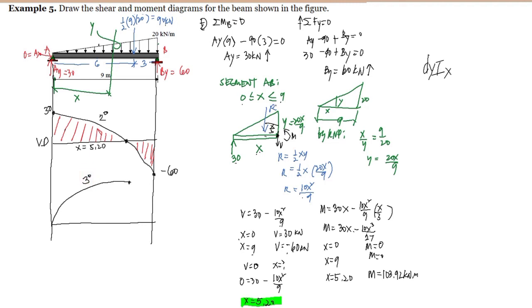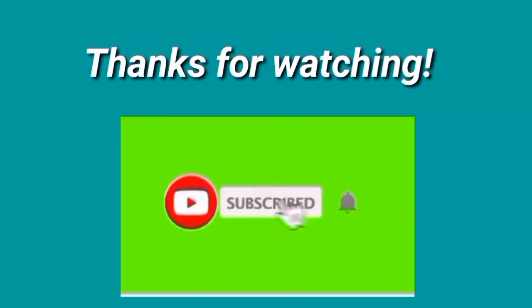Using the relationship that the degree of the moment diagram is n plus 1 relative to the shear diagram: since the shear is degree 2, the moment is degree 3. At x equals 9, the moment equals zero. Because the load is decreasing, we bend the y-axis to get the correct curvature for the moment diagram, giving us the complete moment diagram.